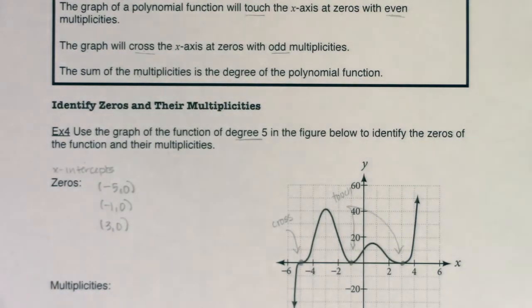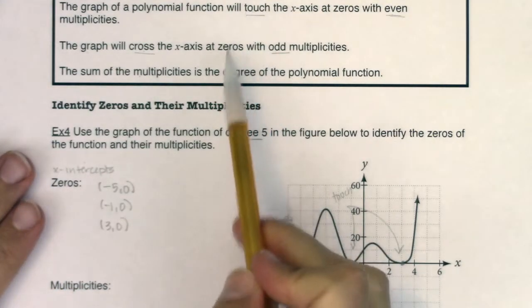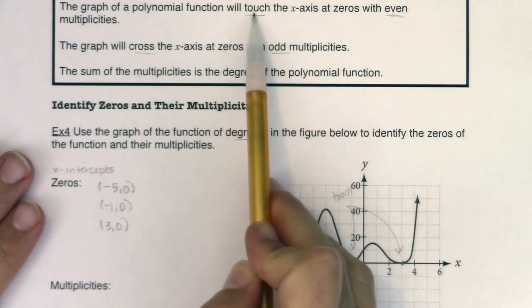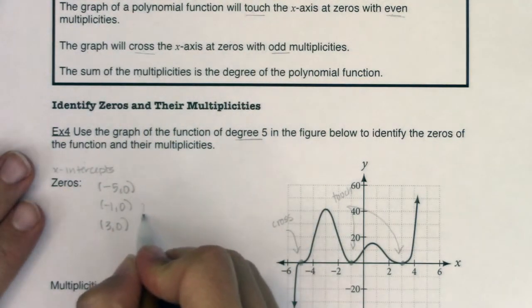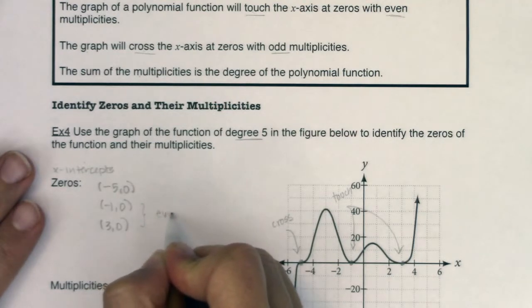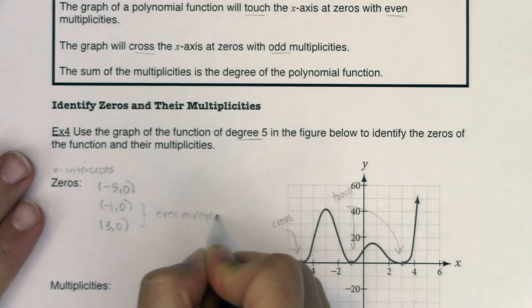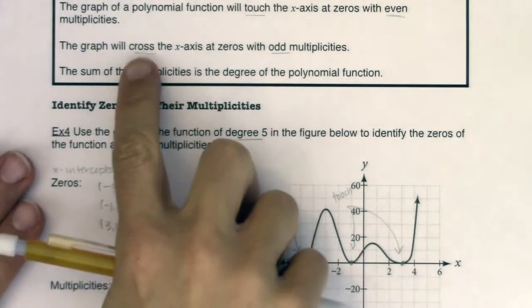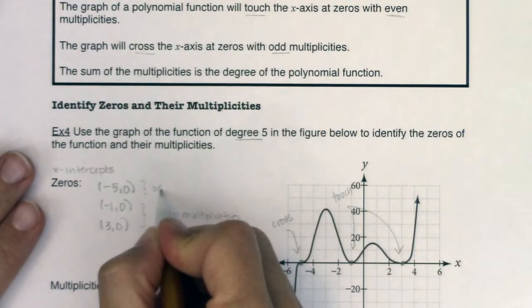So we're going to have to do a bit of deductive reasoning here. These three sentences are all about to come into play. Anytime you touch the x-axis, you have an even multiplicity. So that means for these two right here, I know I would have even multiplicities. And on the flip of that, it says I cross the x-axis whenever I have an odd multiplicity.